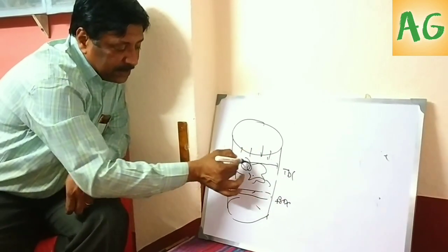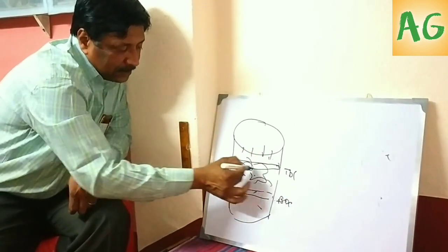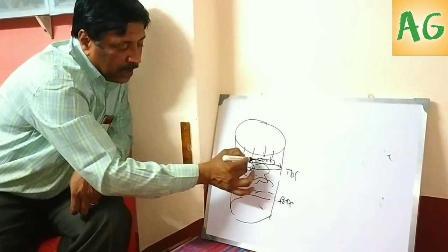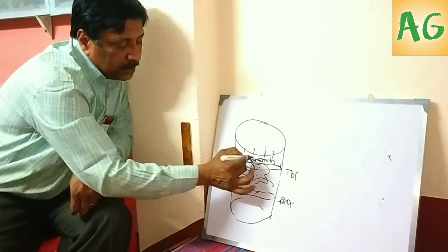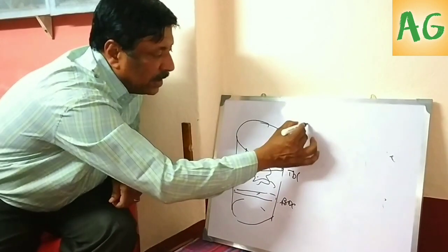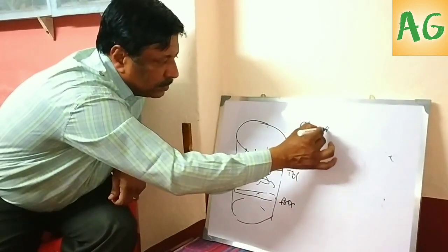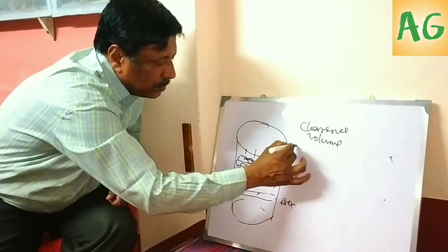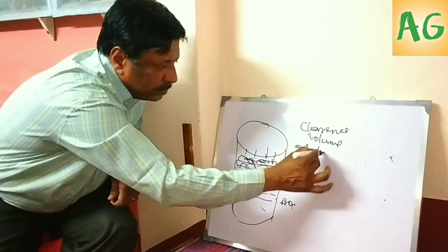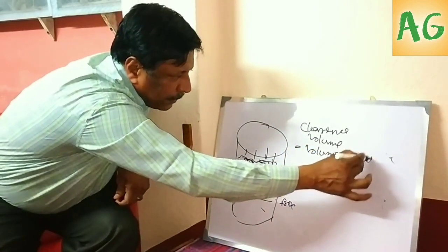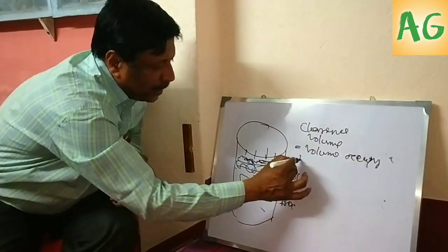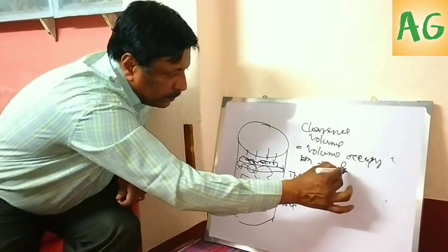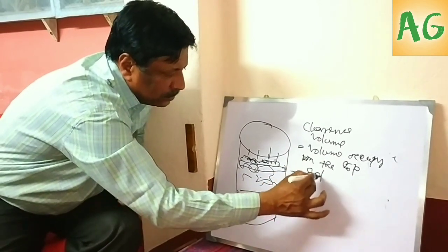While the piston comes to the TDC position, the air occupies the upper portion above the piston. So clearance volume is the volume occupied on the top surface of the piston.